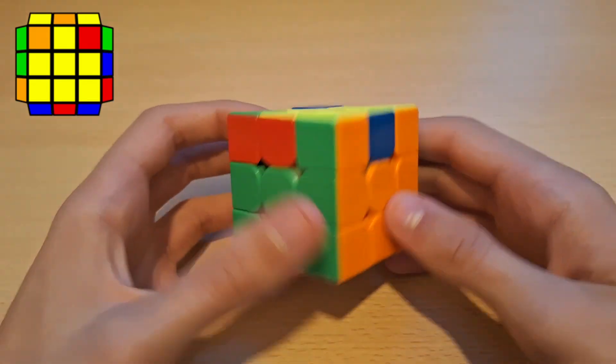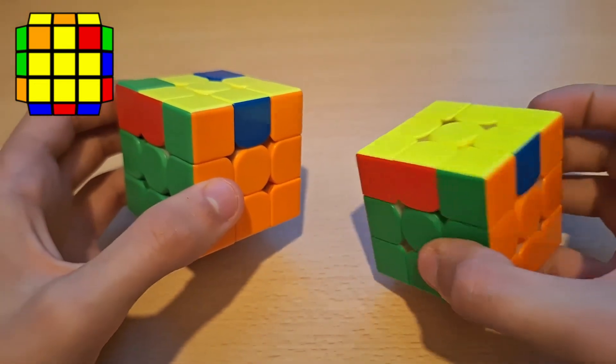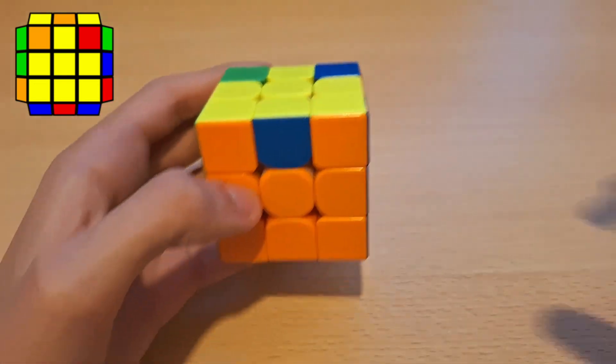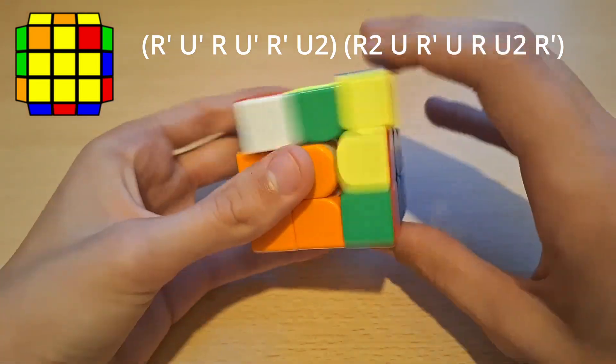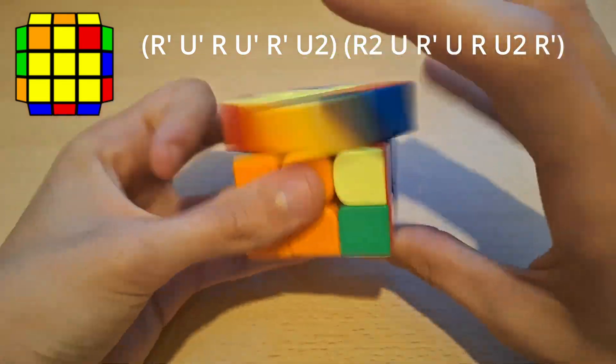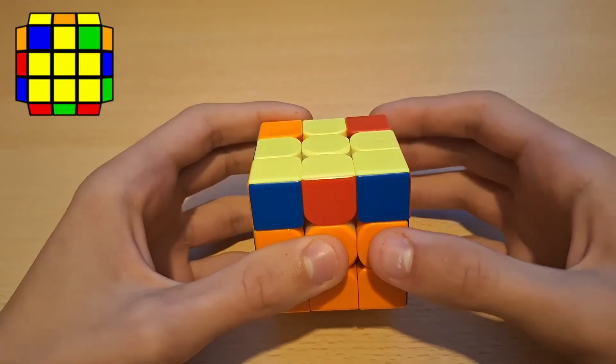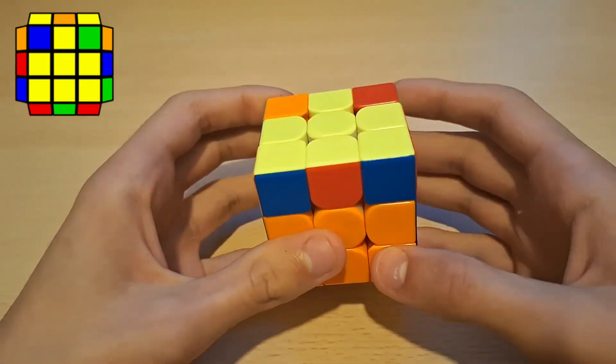So for this ZBLL this is pretty much just from this angle a GA-perm as you can see right here. And for this ZBLL from this angle what you do is back sune and then cancel into sune.